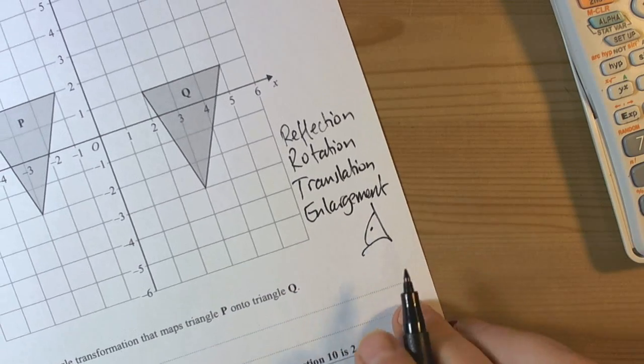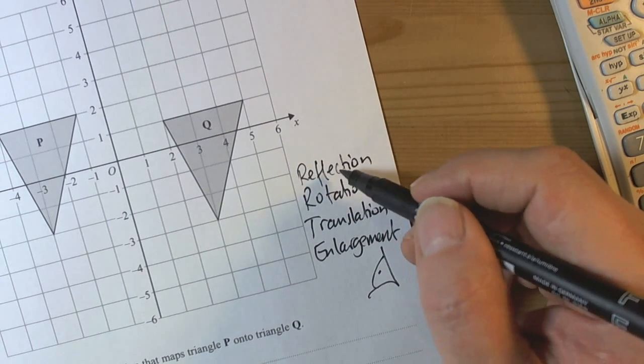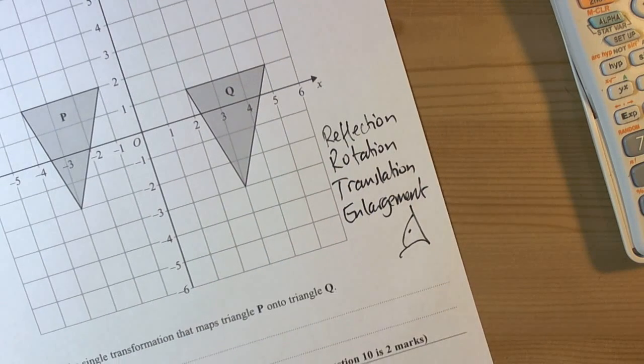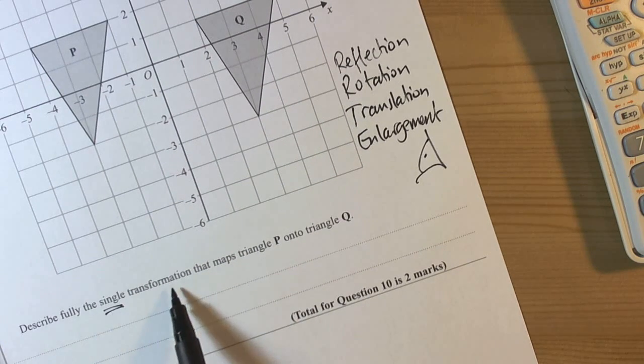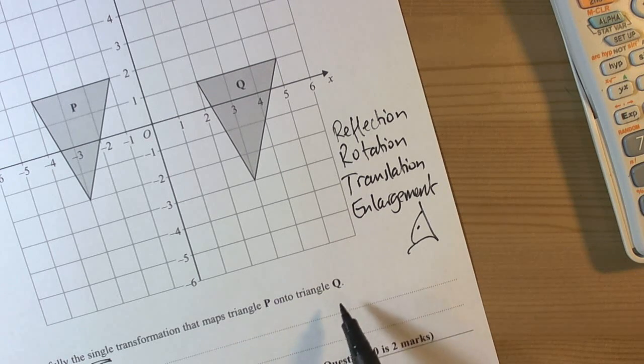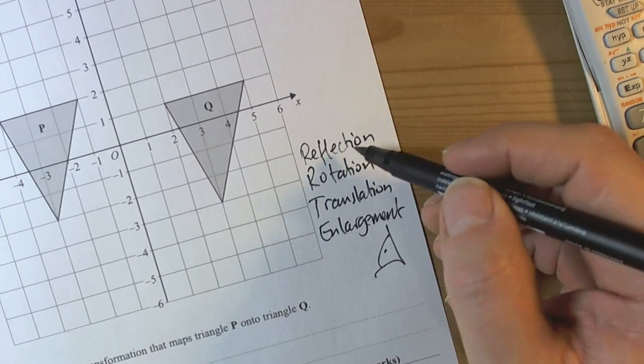Write these out and then you can go through and ask yourself which one seems to be working for the question. Because when it says describe fully the single transformation, you must choose just one of these words and its associated bits to show how it's actually moved. So let's have a look.